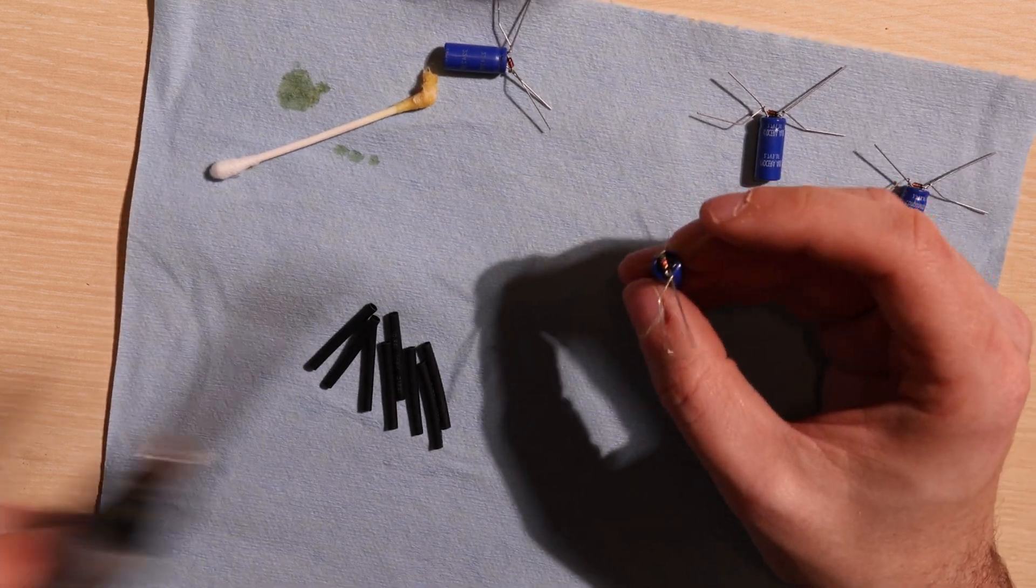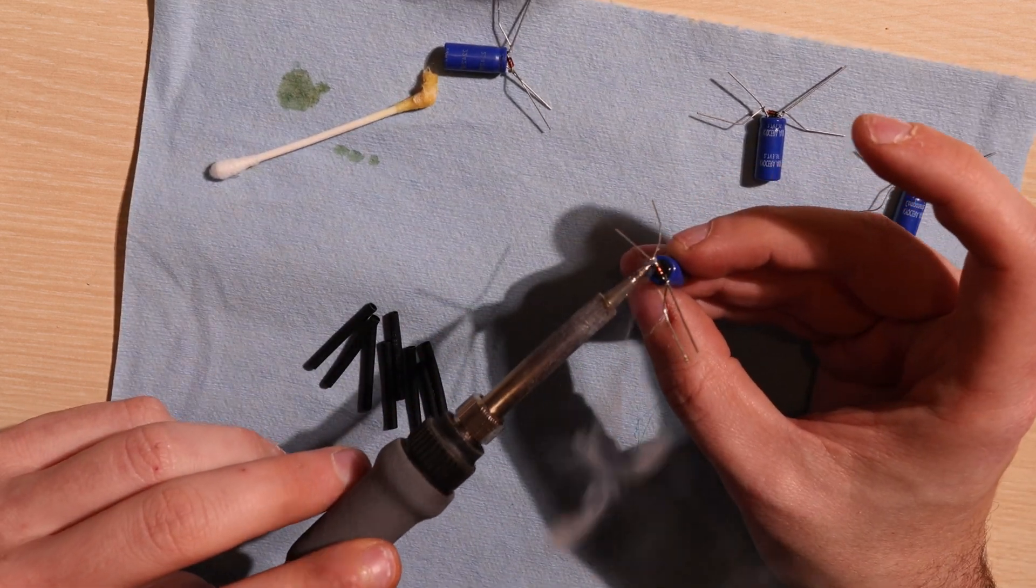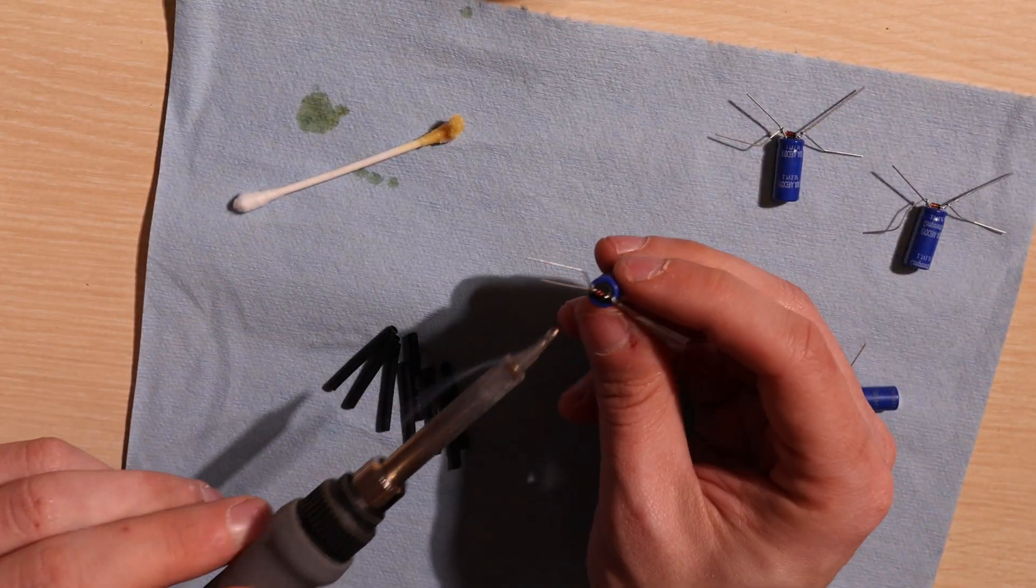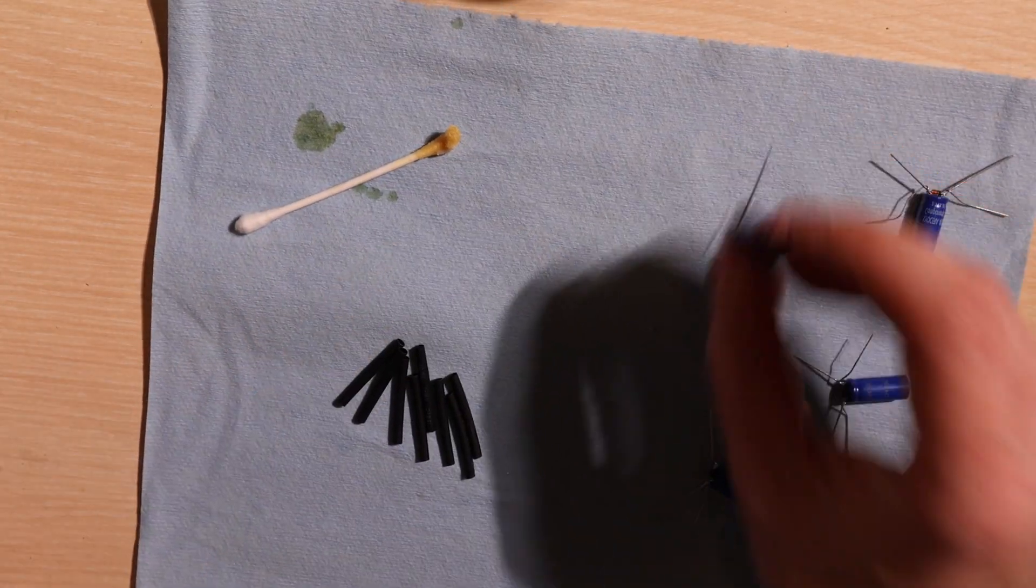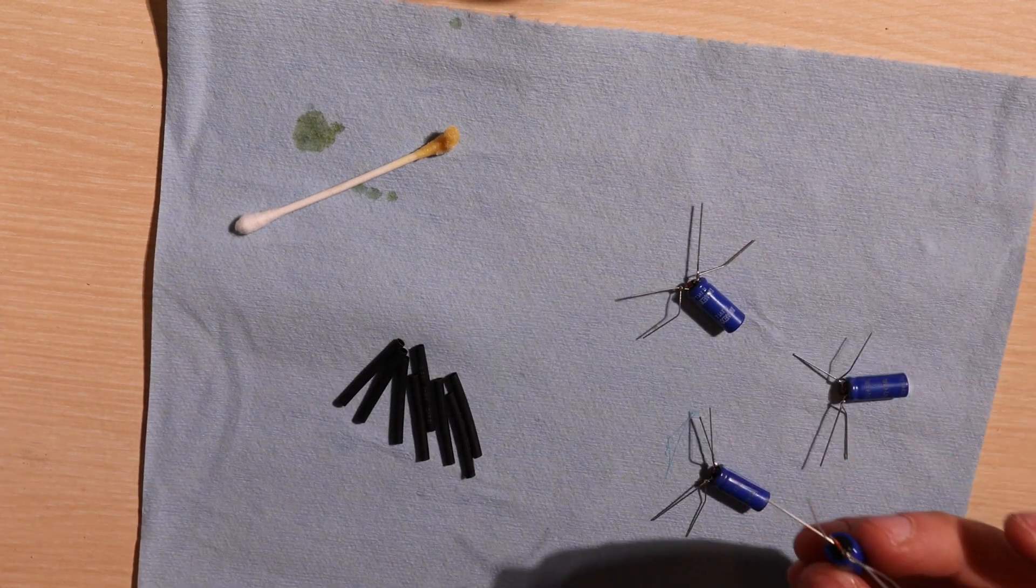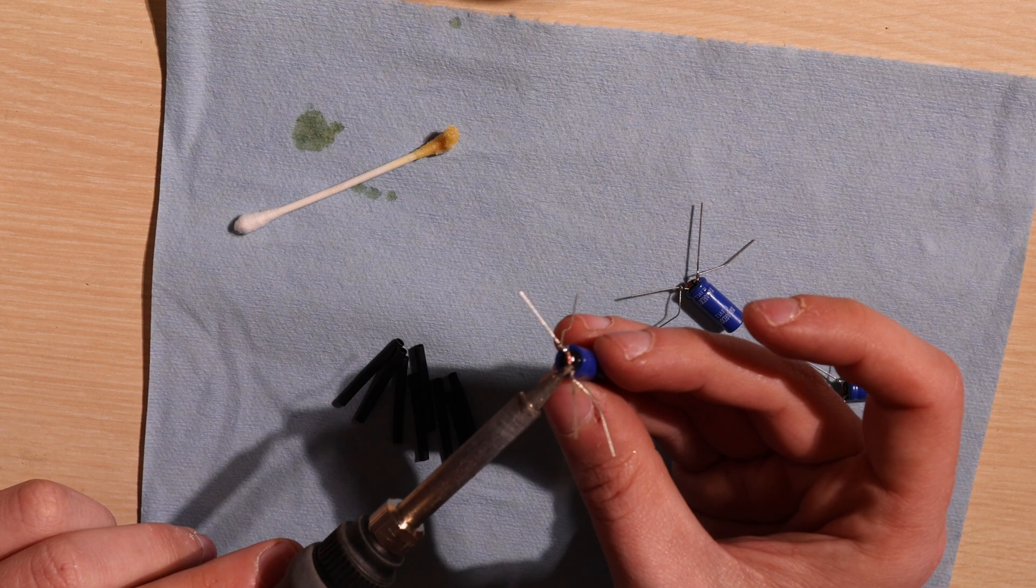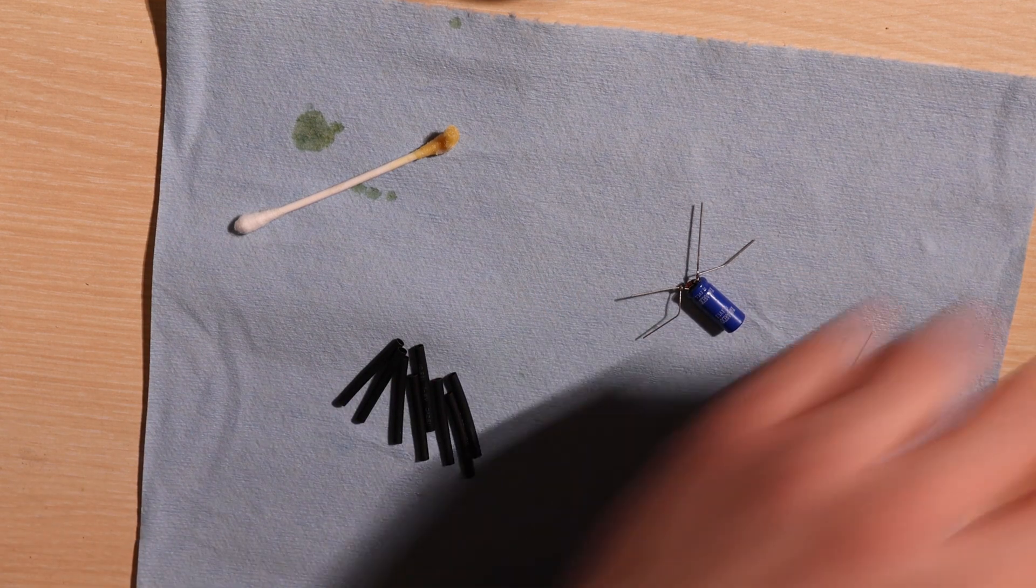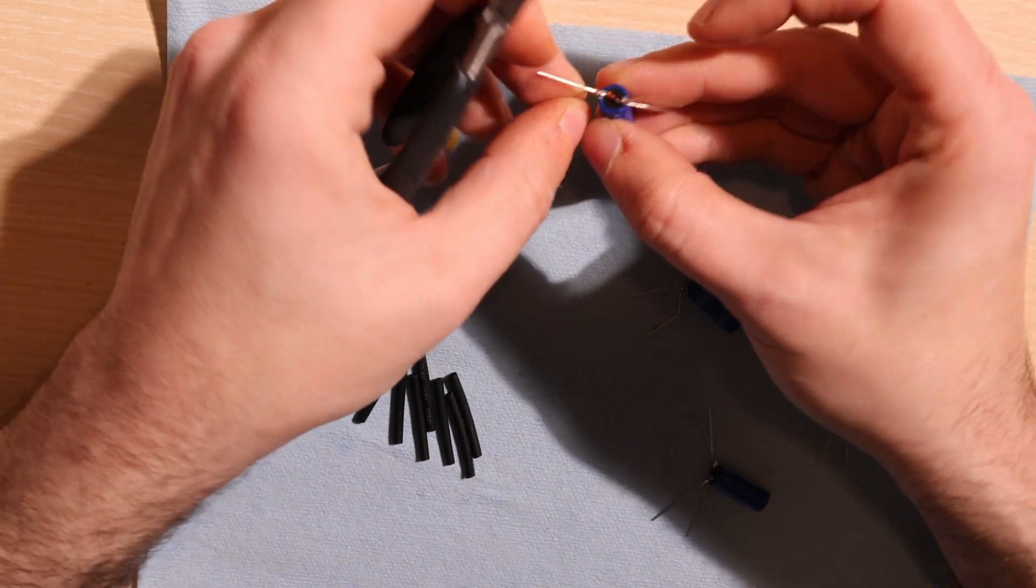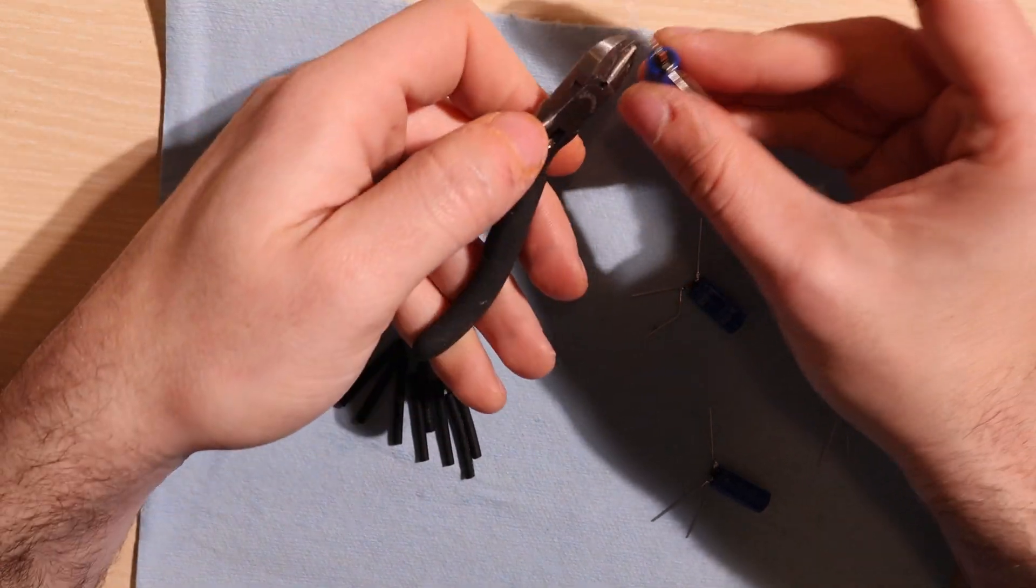Now we're going to use a small amount of solder to solder the diode to the pins of the capacitor. Now we'll trim the excess wires off of the diode so that it's flush to the pins of the capacitor.